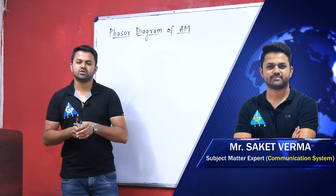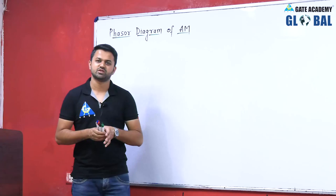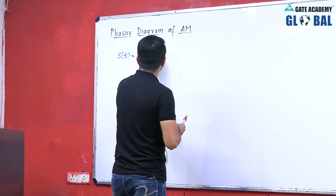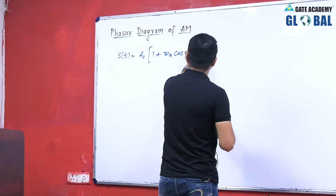The next topic is the Phasor Diagram of Amplitude Modulation. In case of amplitude modulation for a single tone sinusoidal modulating signal, the expression of the AM signal can be written as S(t) = Ac(1 + Ma·cos(ωm·t))·cos(ωc·t).